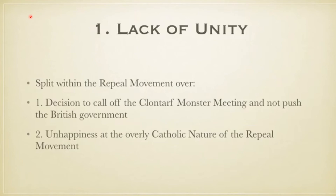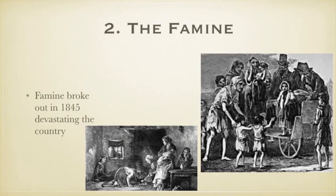The second main reason why the repeal movement lost momentum was the start of the famine. Famine broke out in Ireland in 1845, devastating the country, and this meant that a lot of people were more concerned about food and their families than in repealing the Act of Union.